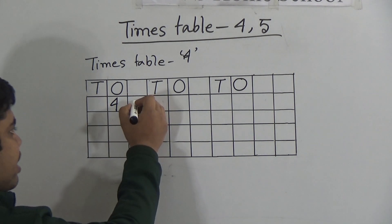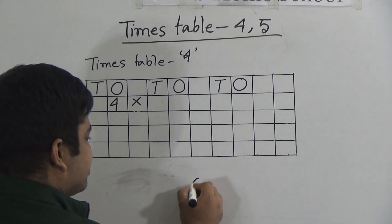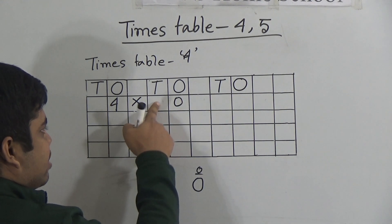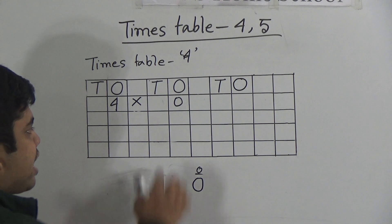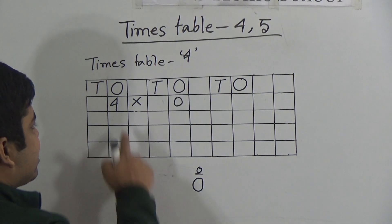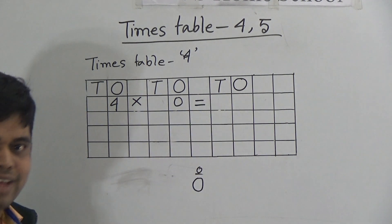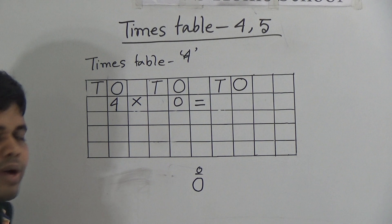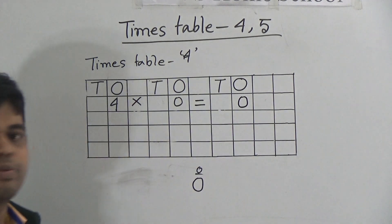After writing 4, we give a multiplication sign. Then we need to write 0. 0 is in ones space, so here we write 0. We need not write 0 in tens space — if you write 0 in tens space, then it will be wrong. So you must write 0 in ones space. After that, 4 multiply 0, then in the empty box you write an equal sign. 4 zeros are 0, so this 0 is written here. I hope you have understood.